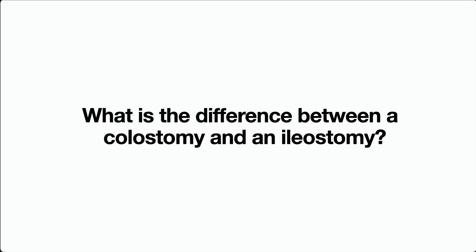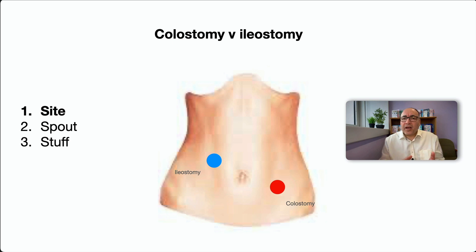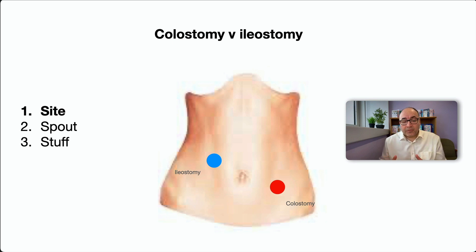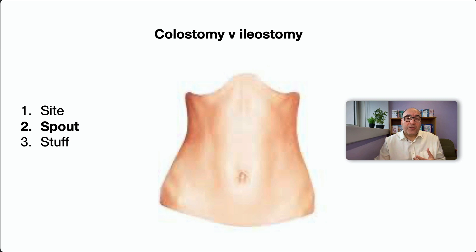Next up: what's the difference between a colostomy and an ileostomy? This is a very commonly asked question, and the best way to think about it is in three ways: sight, spout, and stuff — where stuff means the content of the bag. The site of a colostomy is usually on the left — the left iliac fossa, left side of the abdomen — whereas an ileostomy is usually on the right iliac fossa, right side of the abdomen. Here's an example of an ileostomy on the patient's right and a colostomy on the patient's left.